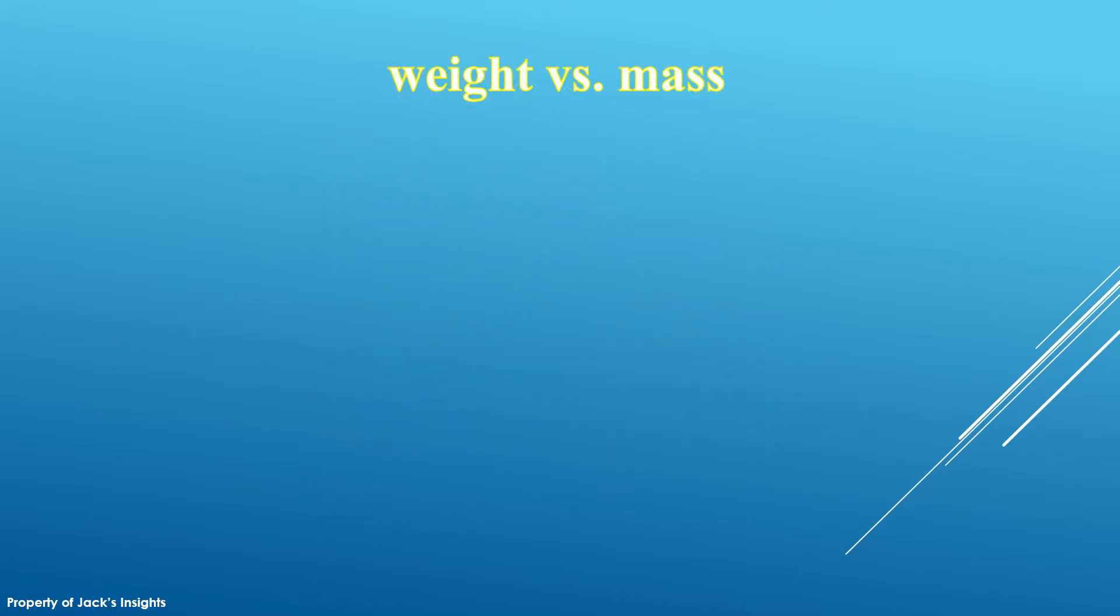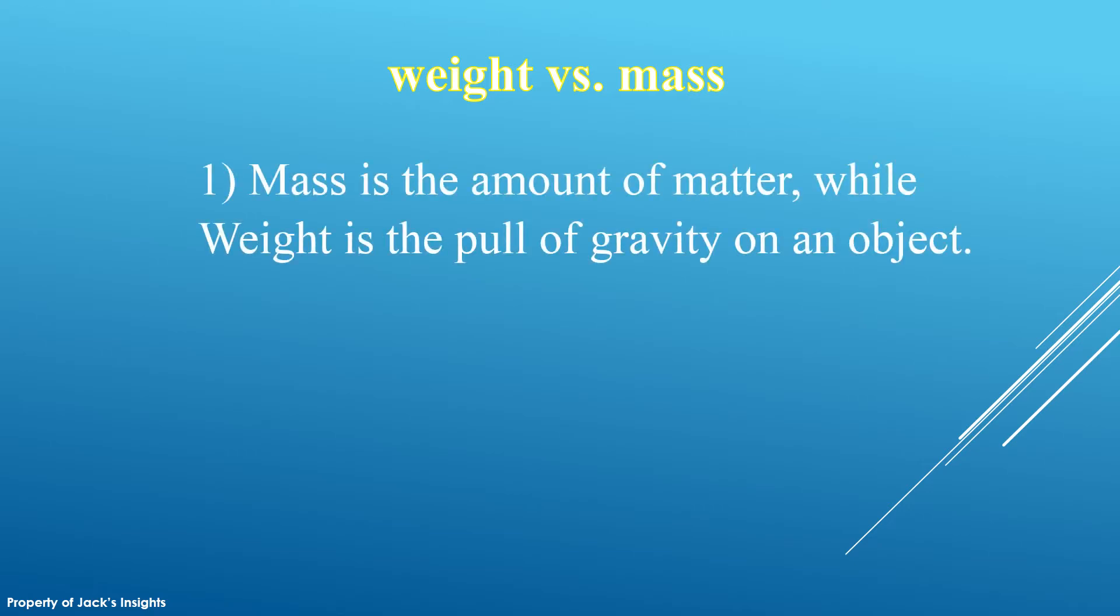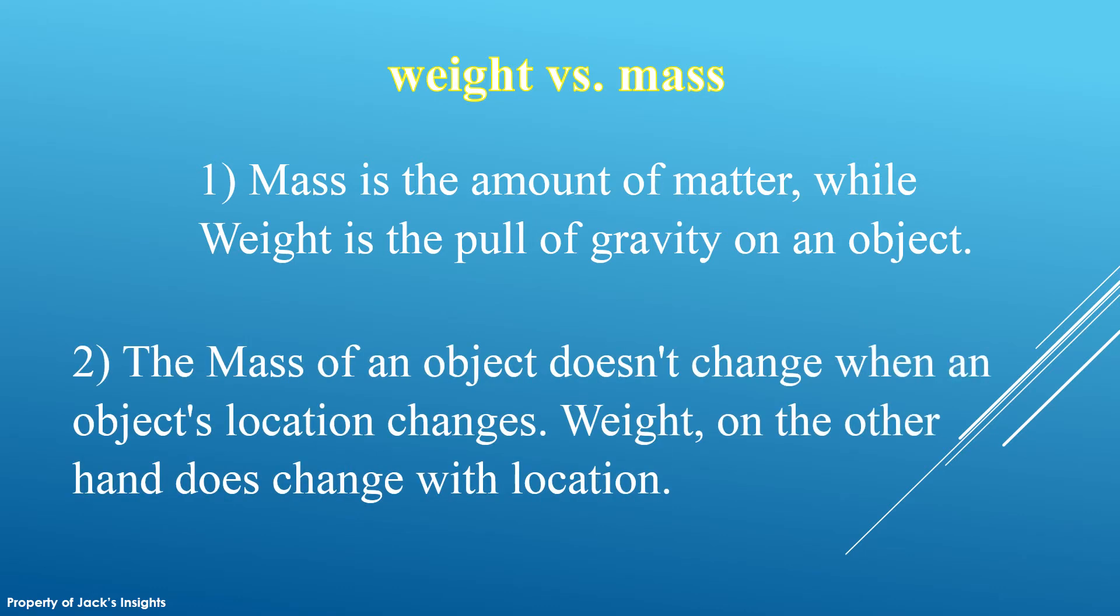These are the summary of the difference between weight and mass. 1. Mass is the amount of matter, while weight is the pull of gravity on an object. 2. The mass of an object doesn't change when an object's location changes. Weight, on the other hand, does change with location.